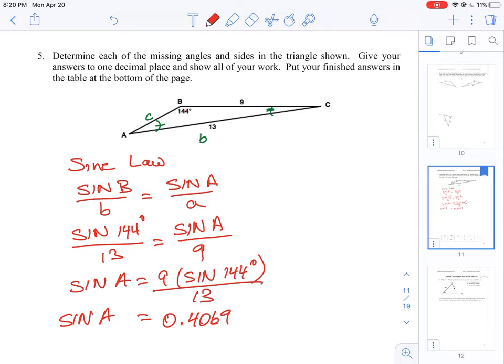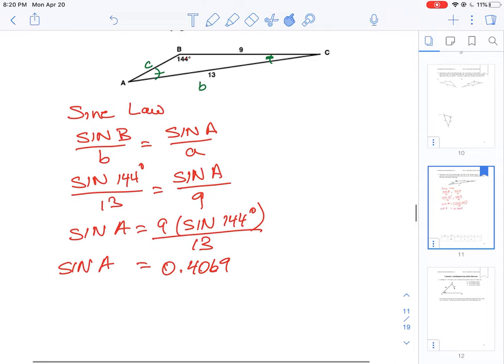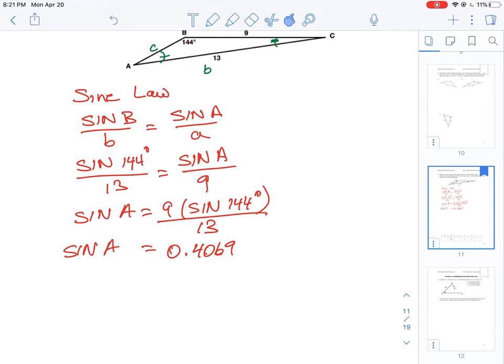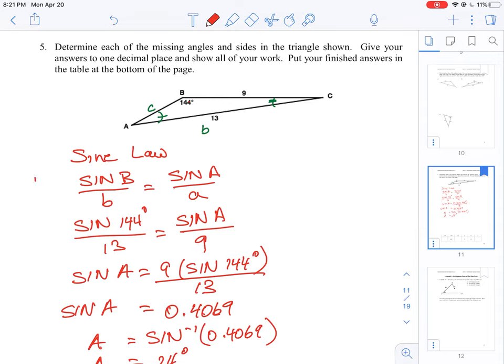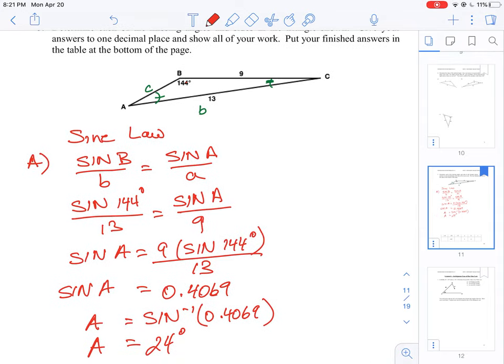Now we have to take the inverse function of this to calculate the angle. So that means A is equal to inverse sine of 0.4069. And again, make sure your calculator is in degree mode, and you should see that it gets approximately 24 degrees. Okay, so that's one property that we could find: the missing angle there is A, it's 24.